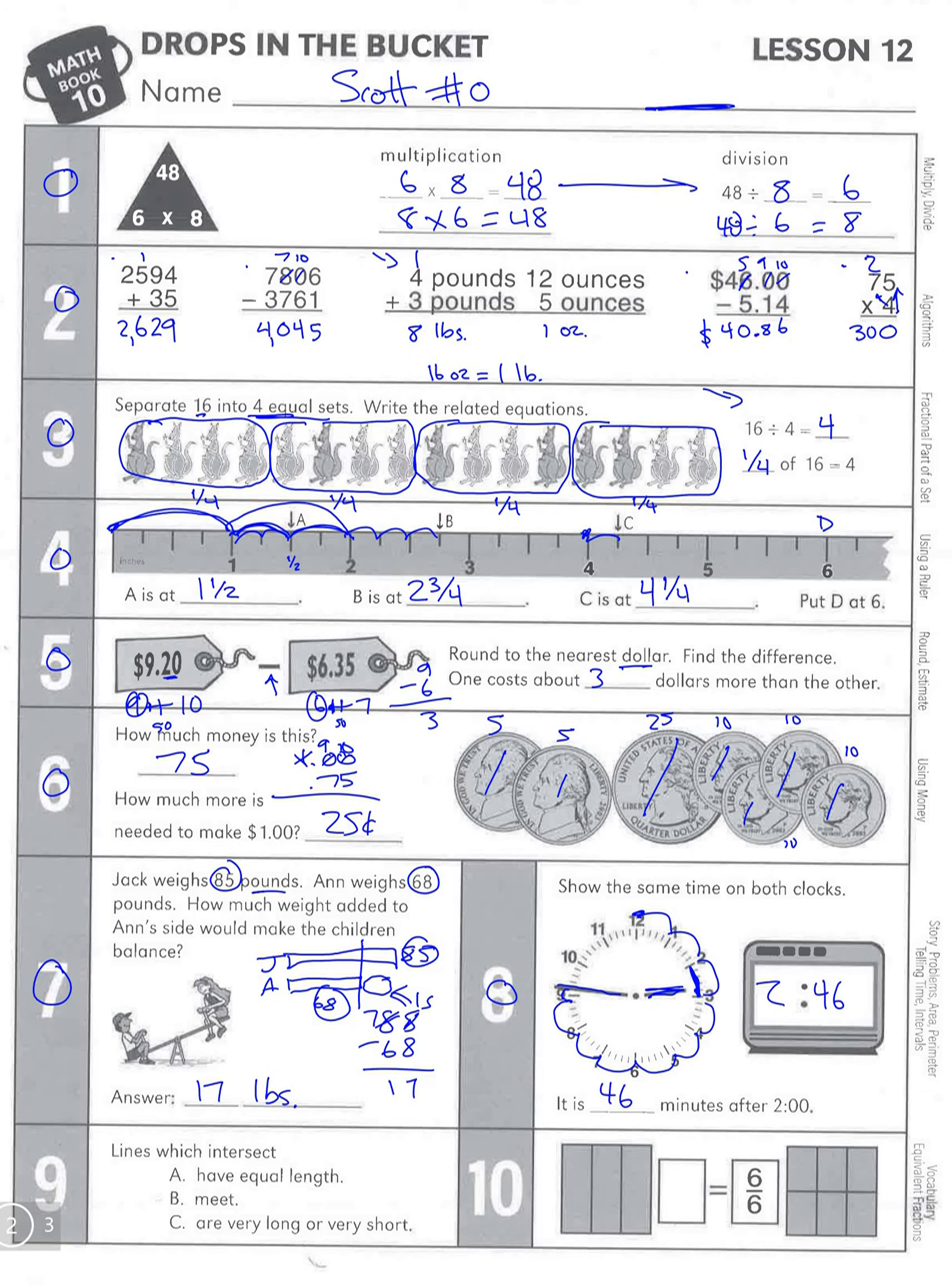Number 9: Lines which intersect. Intersect means to cross each other. Lines that intersect have equal length? Well, maybe, but that doesn't tell us that. They meet? Or they are very long or very short? Another word for cross is meet, like I met my friend. So we're going to go with that.